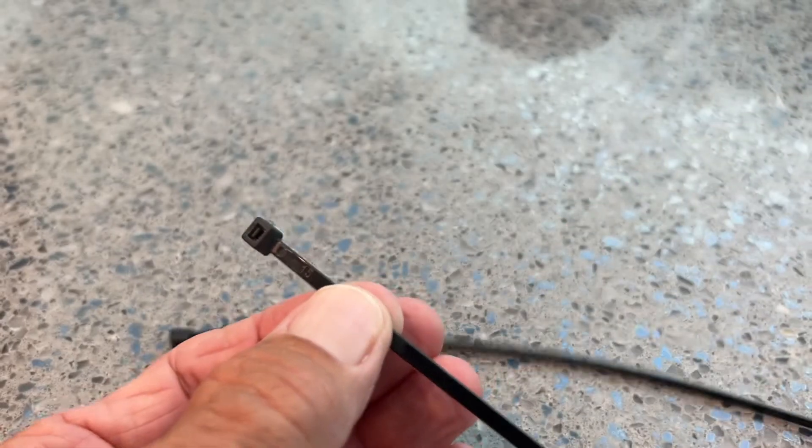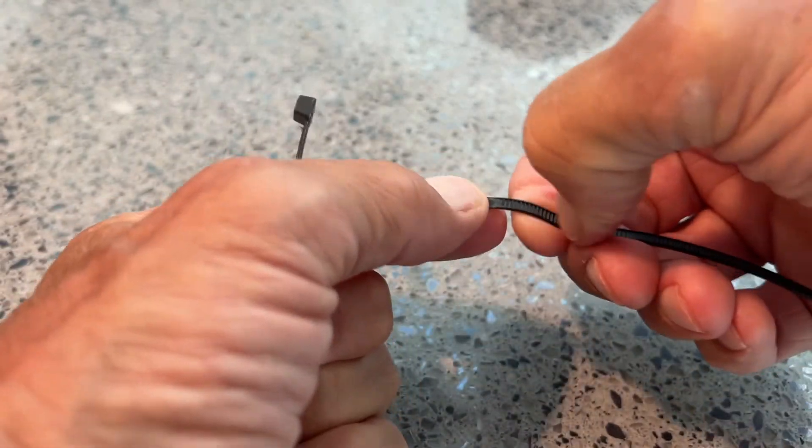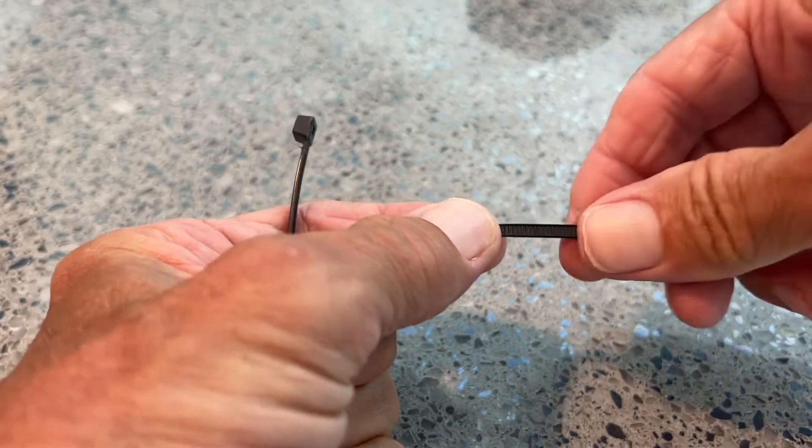So if I wanted to put these two zip ties together, what I would have to do is find the ridge on this side. That's soft here, that's smooth, and there's the ridges, right.